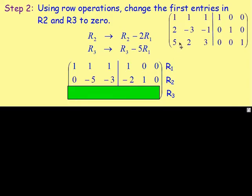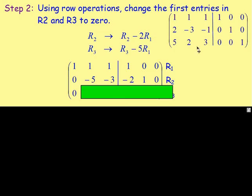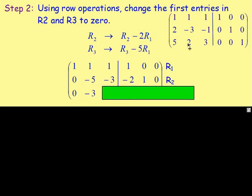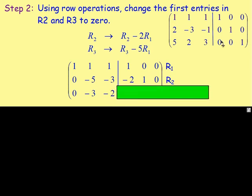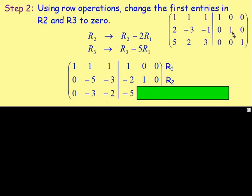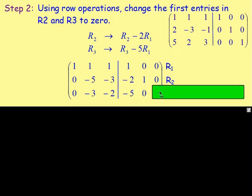We also wanted to change this entry to 0 using row 1. If we do 5 take away 5, that gives us 0. So, we'd have to do row 3 take away 5 times row 1. Doing that: 5 take away 5 times 1 gives us a 0. If we do 2 take away 5 times 1, we'd also do 3 take away 5 times 1, 0 take away 5 times 1, 0 take away 5 times 0, and 1 take away 5 times 0. And that is our new row 3.